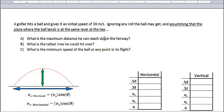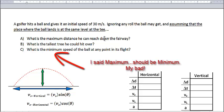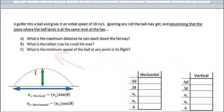Three questions. What is the maximum distance he can reach down the fairway? What is the tallest tree he could hit over? And what is the minimum speed of the ball at any point in its flight? We'll examine that one last because that's more explanation than anything else. We're looking to figure out this blue arrow for the distance, and how high off the ground is he at apogee for the tree height.